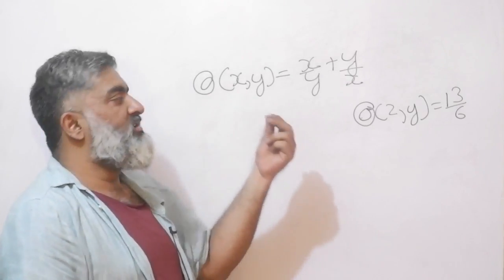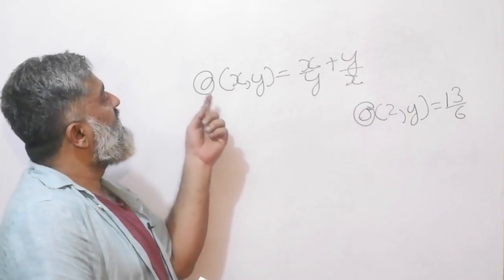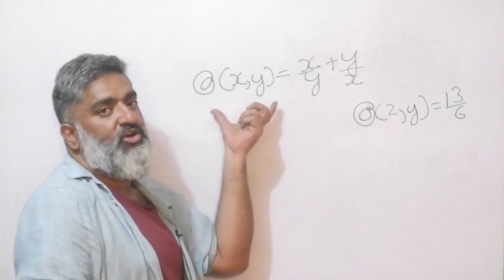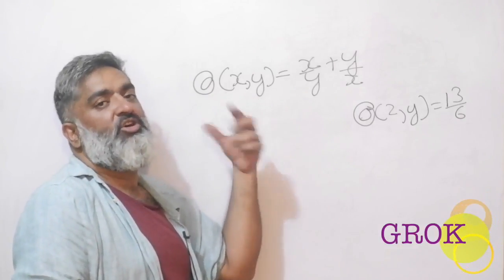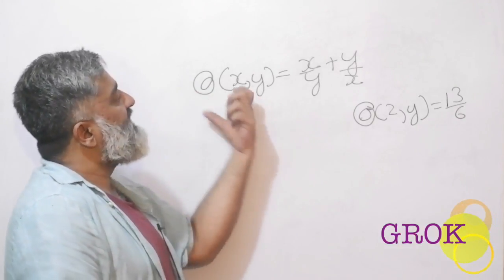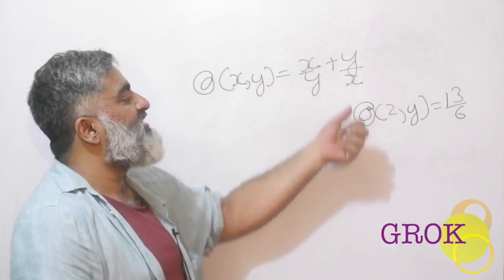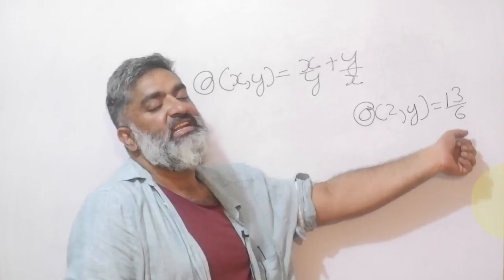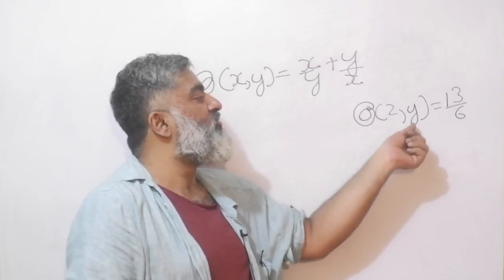Another example, another minor twist in the story. Instead of f I am writing an @ symbol or some other symbol. But if you see this form you know we are talking about a function or an operator. @ of x,y is equal to x/y plus y/x, and @ of 2 comma y is equal to 13/6. Find the value of y.